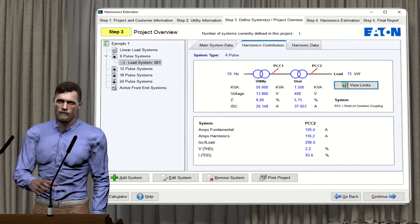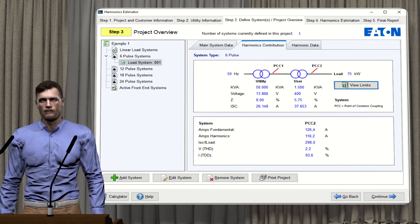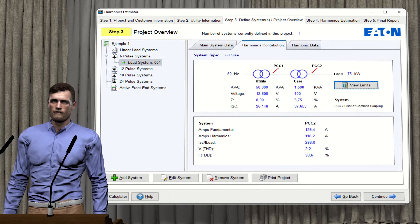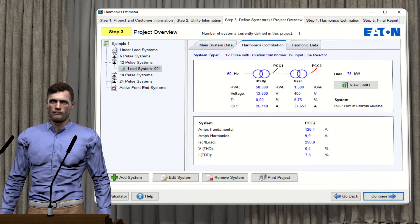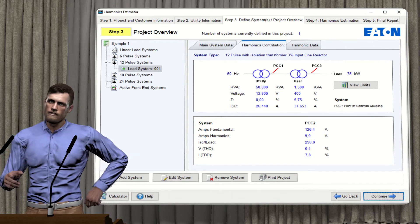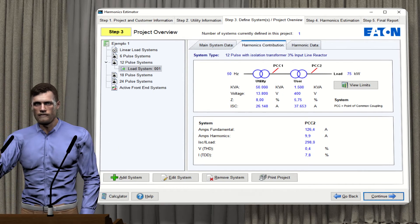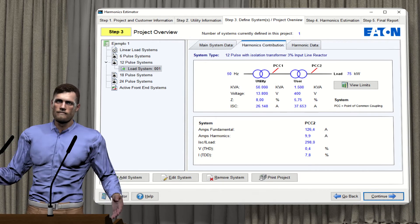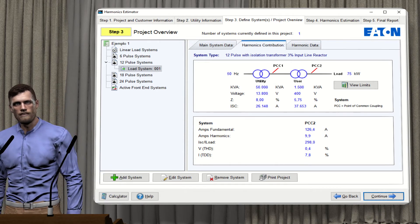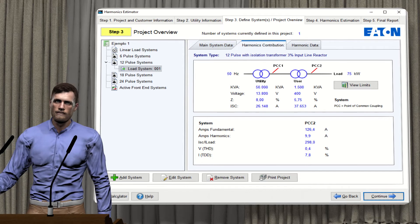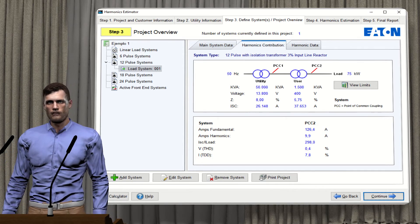For a variable speed drive with a 12-pulse input rectifier stage, the THD values would be around 0.4% for voltage and 8% for current, according to this harmonic calculation software. As we can see, going from a rectifier input stage from 6 to 12 pulses implies a substantial improvement in the current THD value, and as a consequence of the voltage THD.